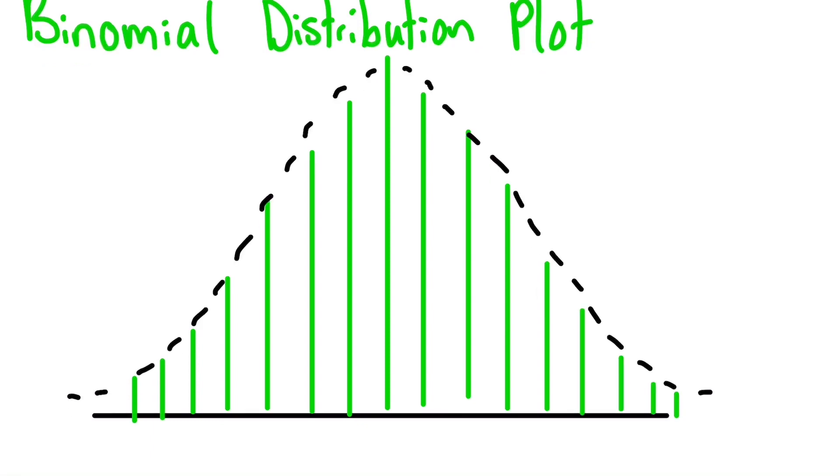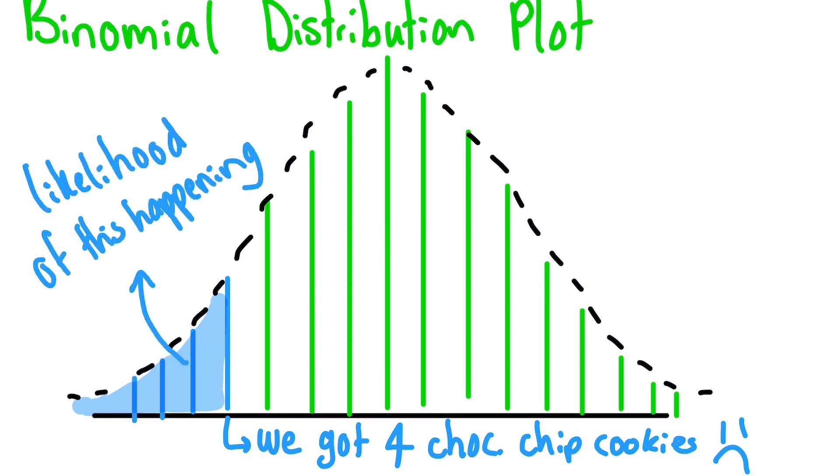Remember, when we measure our event, it's going to fall somewhere along this curve, and then we can figure out the likelihood of it happening. If it's too far out towards the end, then we can say the chance of it happening is too low to be possible, and we can reject the null hypothesis.